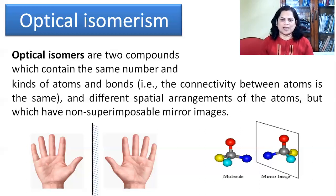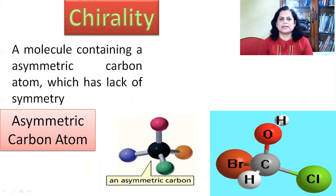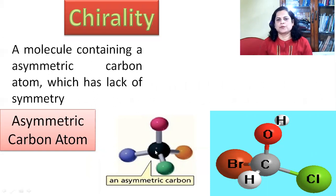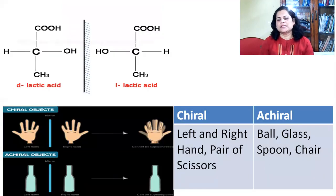A carbon bonded with four different groups and its mirror image gives non-superimposable mirror images. For this to occur, the carbon must be an asymmetric carbon atom. Chirality means a molecule containing an asymmetric carbon atom, which has a lack of symmetry. An asymmetric carbon atom is a carbon atom bonded with four different atoms or groups of atoms. For example, carbon bonded with hydrogen, chlorine, bromine, and a hydroxyl group — these are four different groups, so that carbon is an asymmetric carbon atom.